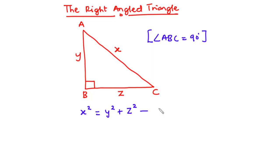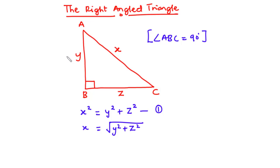Let's call this equation one. If we want to find the value of x, then x is simply the square root of y² + z². To find a side of a right-angled triangle, we need to know the values of at least two of the sides of that triangle in order to find the third side.